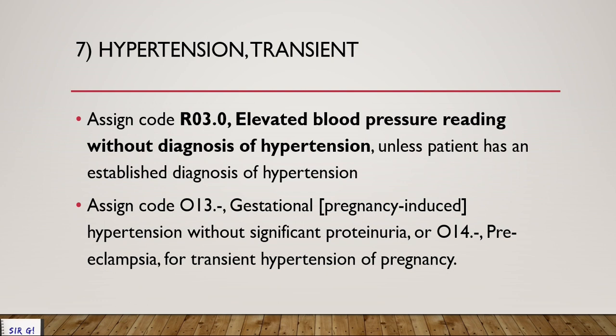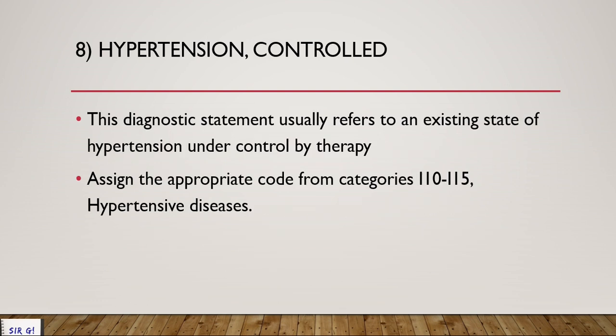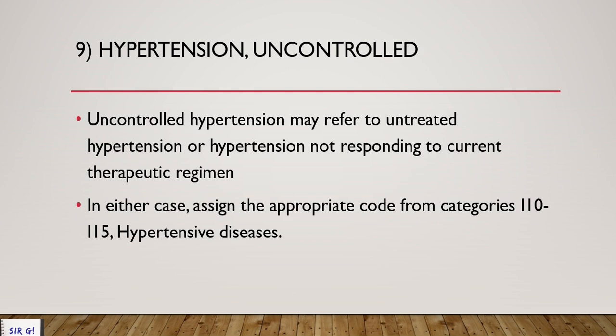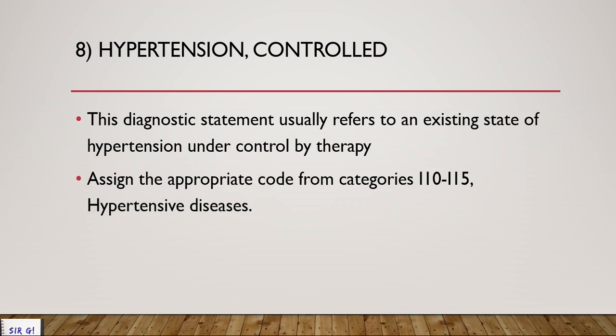Hypertension controlled: when it is being controlled by therapy or medications, there is no specific guideline for this. Even if it is controlled or uncontrolled, it is still coded to your category I-10 to I-15. Before with ICD-9 it mattered if it was controlled or uncontrolled, but in ICD-10 it no longer matters for coding purposes — however it is still very important in the documentation, especially for chronic care management (CCM) and the MIPS merit-based incentive payment system.